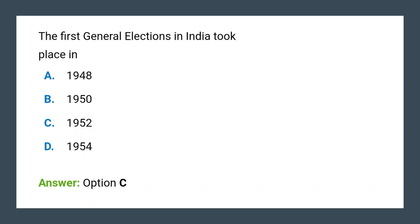Next question: When did the first general election take place in India? The first general election took place in India in the year 1952. The first election began on 25th October 1951 and concluded on 21st February 1952.